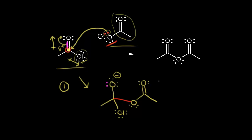It turns out this is a two-step mechanism. In the second step, we're going to get loss of a leaving group. A lone pair of electrons on this oxygen moves back in to reform a carbonyl, but we cannot exceed an octet of electrons on this carbon. So that means these two electrons come off onto chlorine — off onto our leaving group — which would be the chloride anion. These electrons in blue come off onto the chlorine to form the chloride anion, which is our leaving group. So we get loss of a leaving group, and we reform our carbonyl, which gives us our final product.